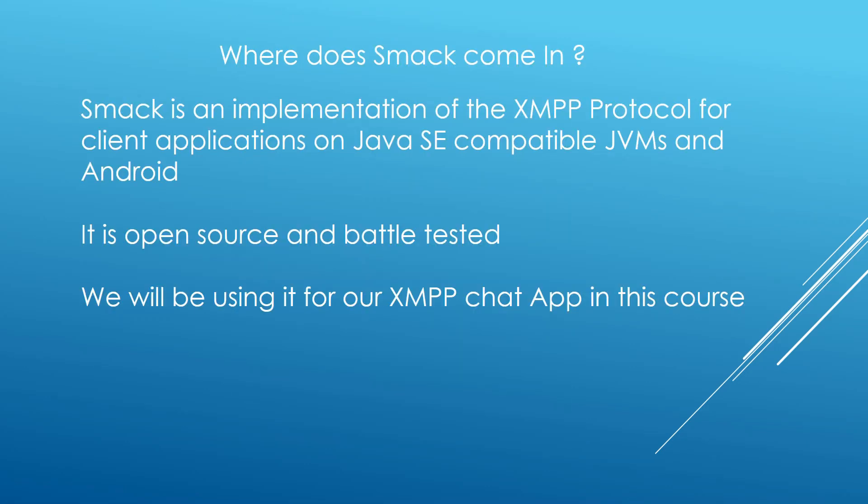Where does Smack come in? Smack is an implementation of the XMPP protocol for client applications on Java SE-compatible JVMs and Android. It is a library you can use to build chat applications based on XMPP that run on Java-enabled devices and Android. It is open-source and battle-tested — it's been used in many real-life projects, and we're going to be using it in this course.